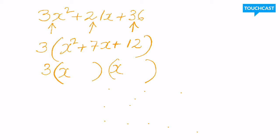into 12 four times. 3 times 4 is 12, and 3 plus 4 is 7.